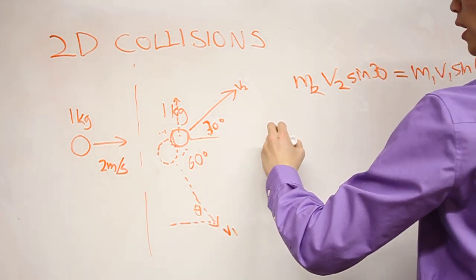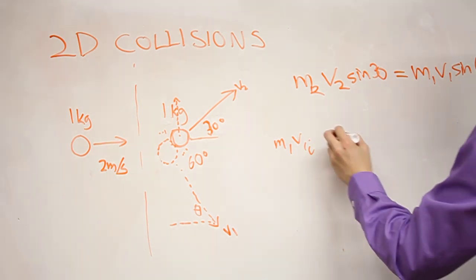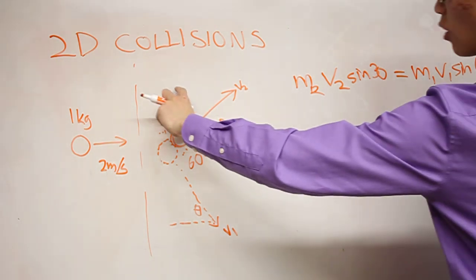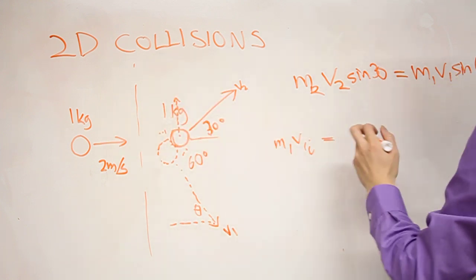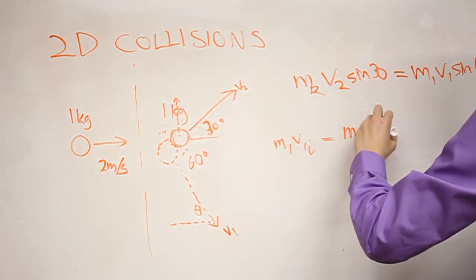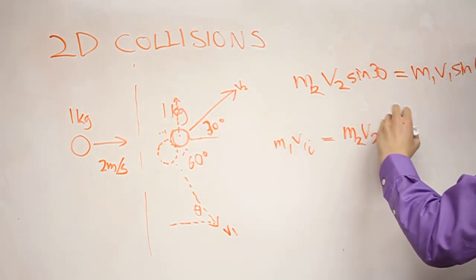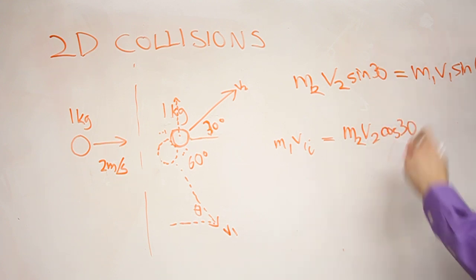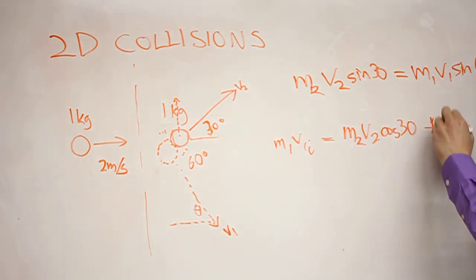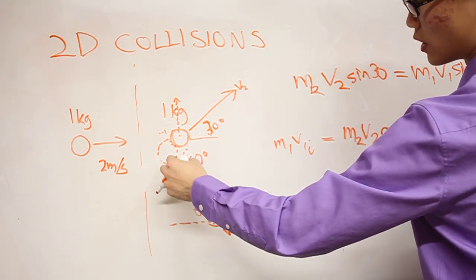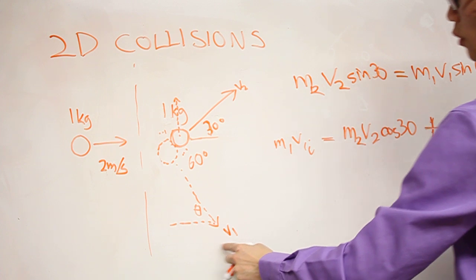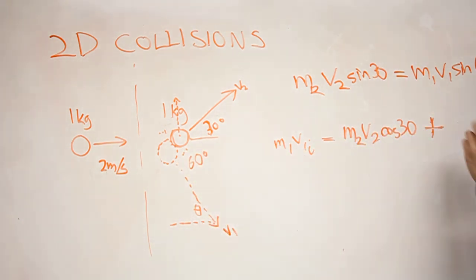So we can write it as this horizontal momentum, which is all of it, M1, V1 initial, is going to equal the horizontal momentum of this one. So we already figured out the vertical component. Now we write the horizontal component as M2, V2, cosine 30. And then we add to it the horizontal component of this ball, which is going to be M1, V1 times cosine 60.